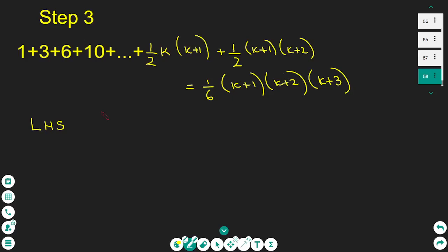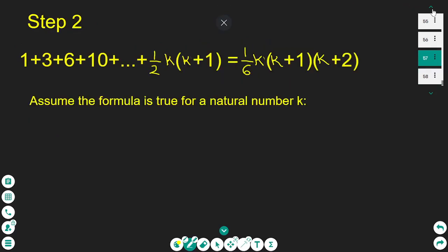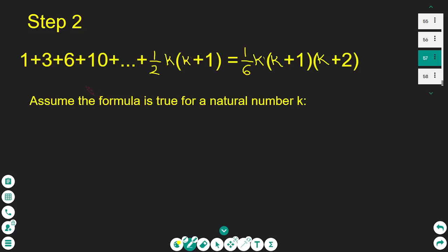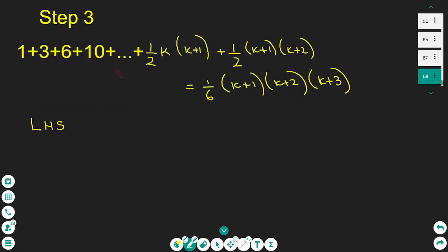On step 3, I'm going to check the formula for the value of a natural number k+1, the following natural number. Because the formula works for the first natural number n equals 1 as per step 1, we make the assumption that it works for n equals k. So we are going to test whether the formula is true for k+1, and we start with the left hand side.